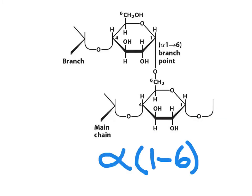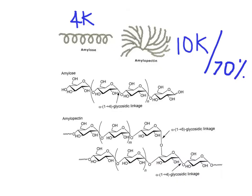To form the branch, the anomeric carbon of an alpha glucose will react with the free hydroxyl group on carbon number six of a second unit. That second unit has already formed the alpha-1,4 glycosidic bonds. Starch has a much higher content of amylopectin than amylose because of the high chances of branches on carbon six of glucose units.